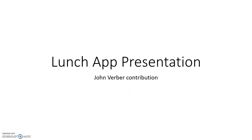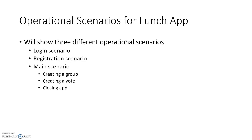This is Lunch App, and this is my presentation, my contribution to what Ahmed and Michael have already done. I will be discussing operational scenarios for Lunch App. I will show three different operational scenarios: the login scenario, the registration scenario, and the main scenario. Under the main scenario, I have creating a group, creating a vote, and closing the app. Creating a group and creating a vote could actually be their own scenarios, but I just made the main scenario to show the workflow. I didn't include errors in it. I did that under login and registration. So I'm just using it to give you an idea of how the app works from beginning to end.